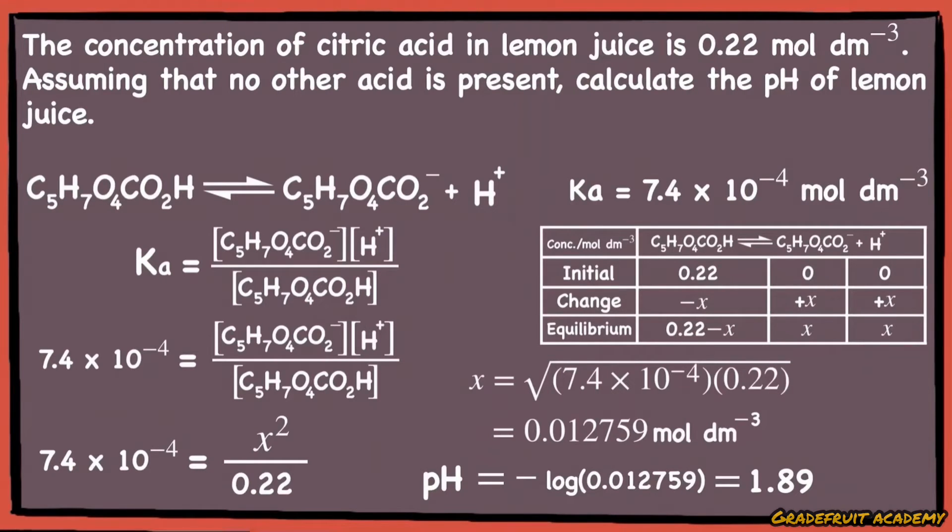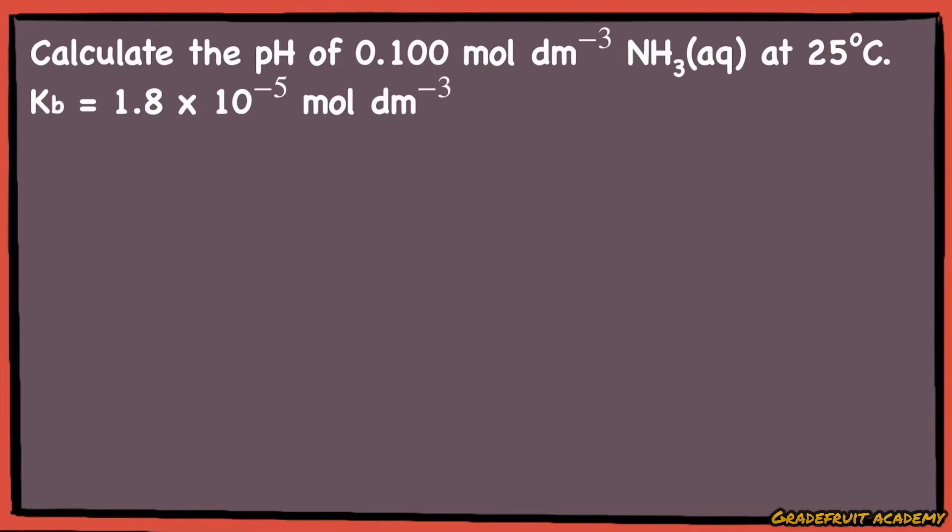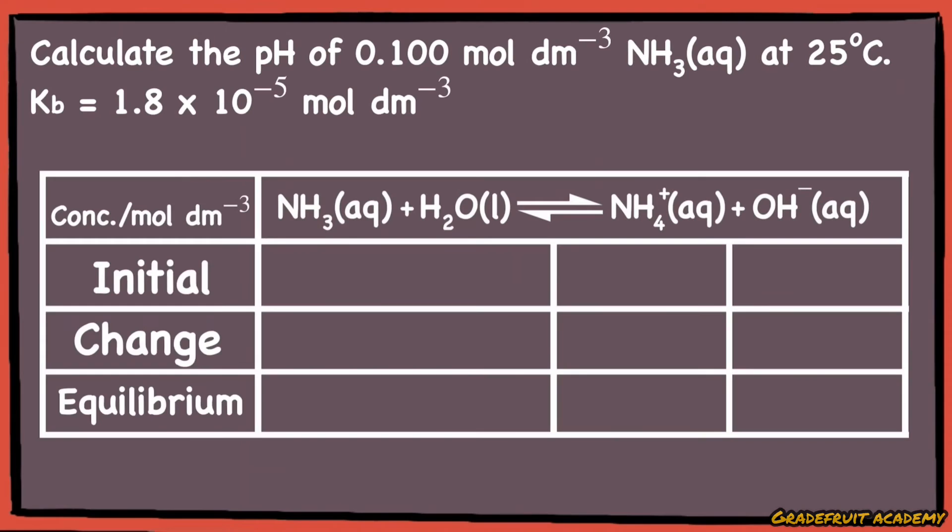The ICE table can also be used to find the pH of weak bases. Take this question for example. Again, feel free to pause the video right now to digest the question. To find the pH of ammonia, we first have to write out the equation when it is ionized in water, then draw the ICE table.